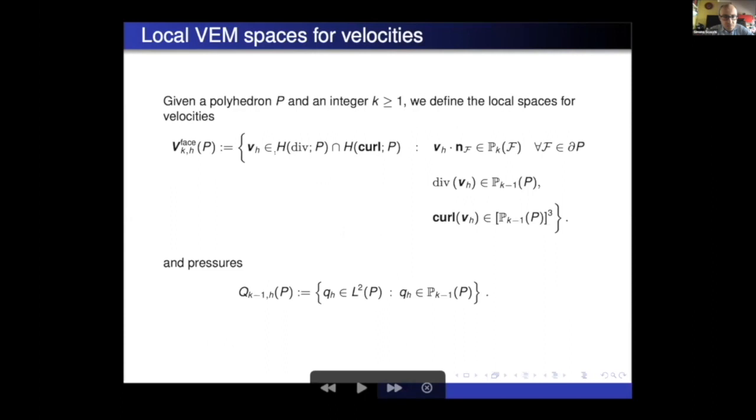But first, let's see who are the local discrete spaces. For the velocities, we take this vector function defined on the general polyhedron, where the normal component on the face is polynomial of degree k. The divergence of v_h is a polynomial of degree k minus one, and the curl, a vector polynomial of degree k minus one. So with this definition, the polynomials of degree k are inside the space, but then there are other functions which we don't know and that are virtual. For pressure, we use a standard space of polynomial of degree k minus one. So if k is the degree of our approximation, pressure will be, in case k equals one, pressure will be constant and then P1 and so on.